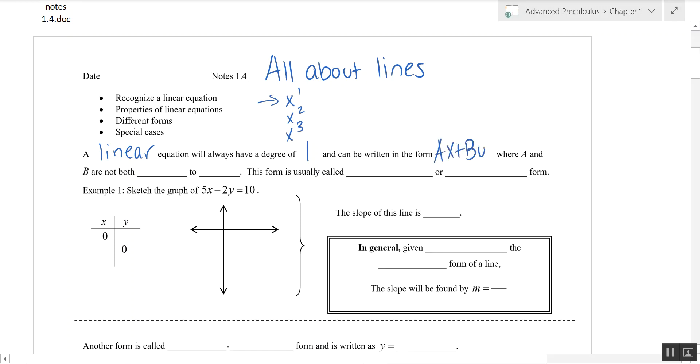ax plus by is equal to c. When we use this standard form, a, b, and c are typically integers. And a is always greater than zero or positive. Neither a or b are both equal to zero. One can be zero, but not both. So this form is usually called standard or general form.